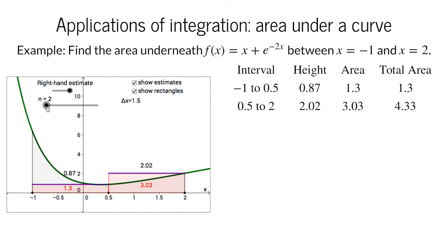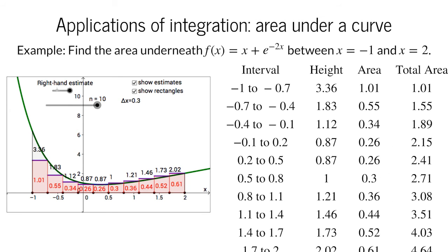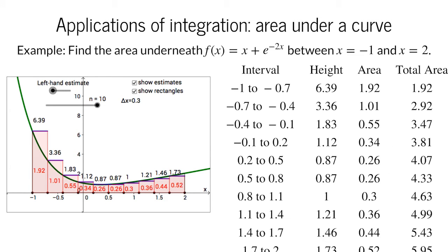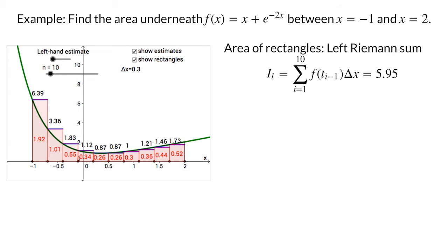To improve the accuracy, we can increase the number of subintervals. For 10 subintervals, we obtain estimates for the area of 5.95 for the left-handed estimate and 4.64 for the right-handed estimate. The sum used to calculate the area of the rectangles is exactly the Riemann sum we use to define the definite integral. For the left-handed estimate, we get the left Riemann sum, which is the sum from i equals 1 to 10 of f of t sub i minus 1, which is the height of the left side of each subinterval times the width of the rectangle delta x.